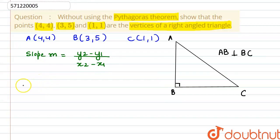So here, we can find the slope of AB. That is M of AB equals Y2 is 5 minus Y1 is 4 divided by X2 is 3 minus X1 is 4. So 5 minus 4 is 1 divided by 3 minus 4 is minus 1. Here, we got slope of AB as minus 1. This is our equation 1.